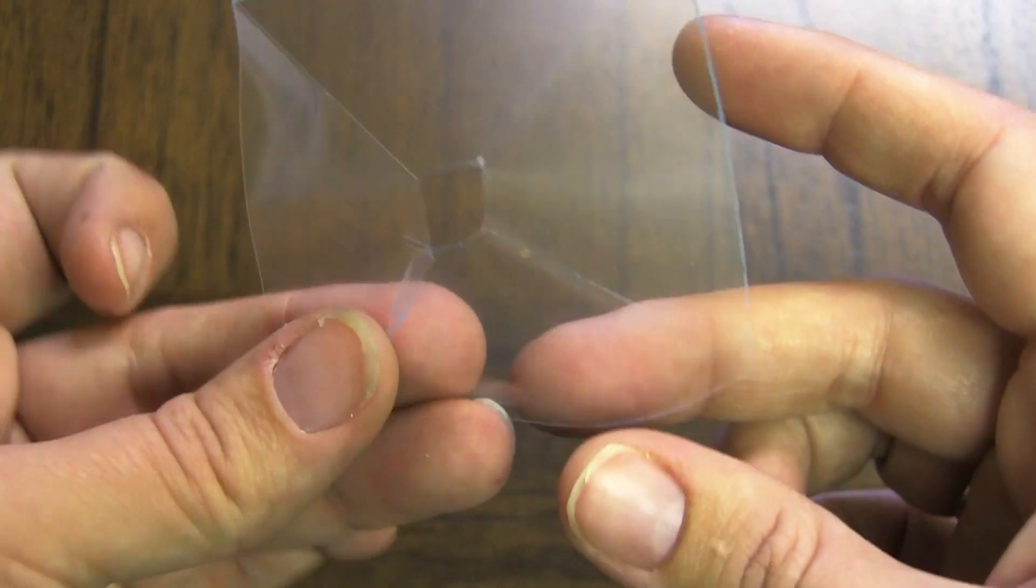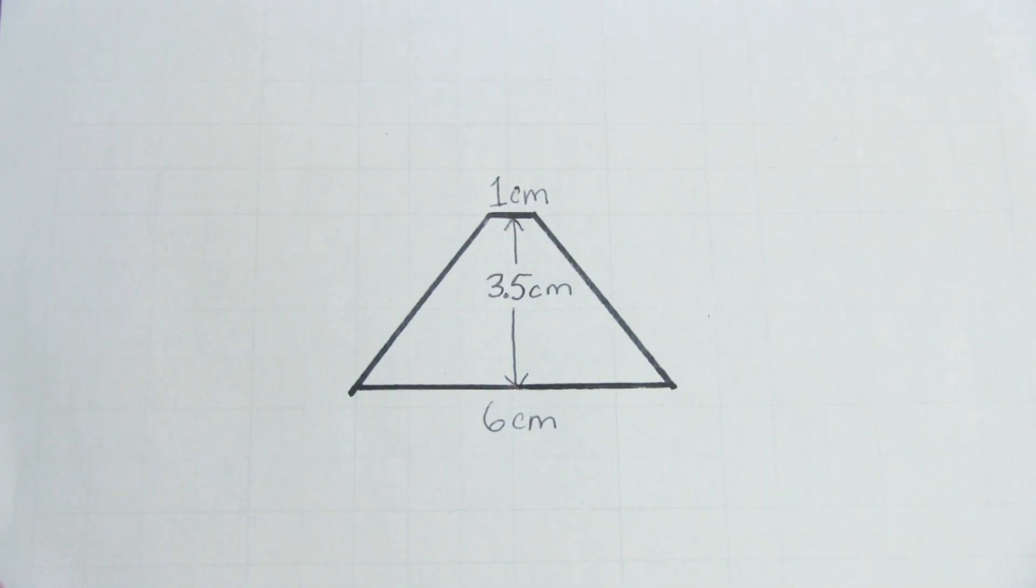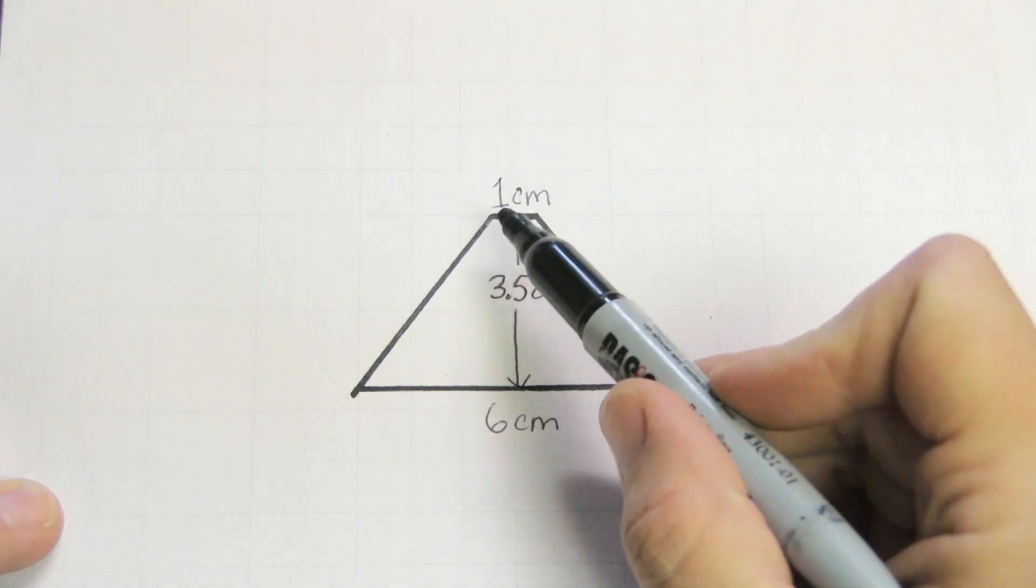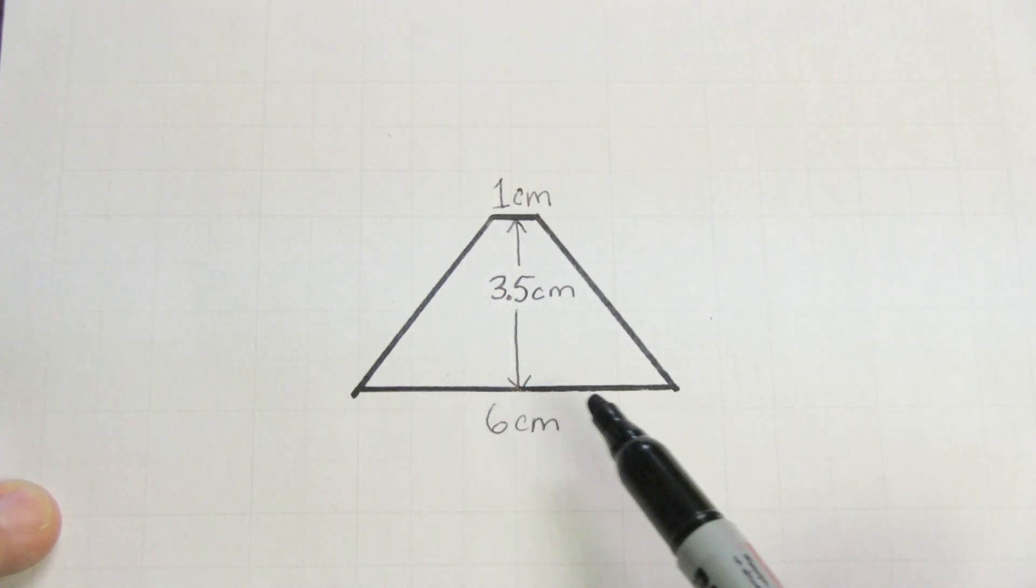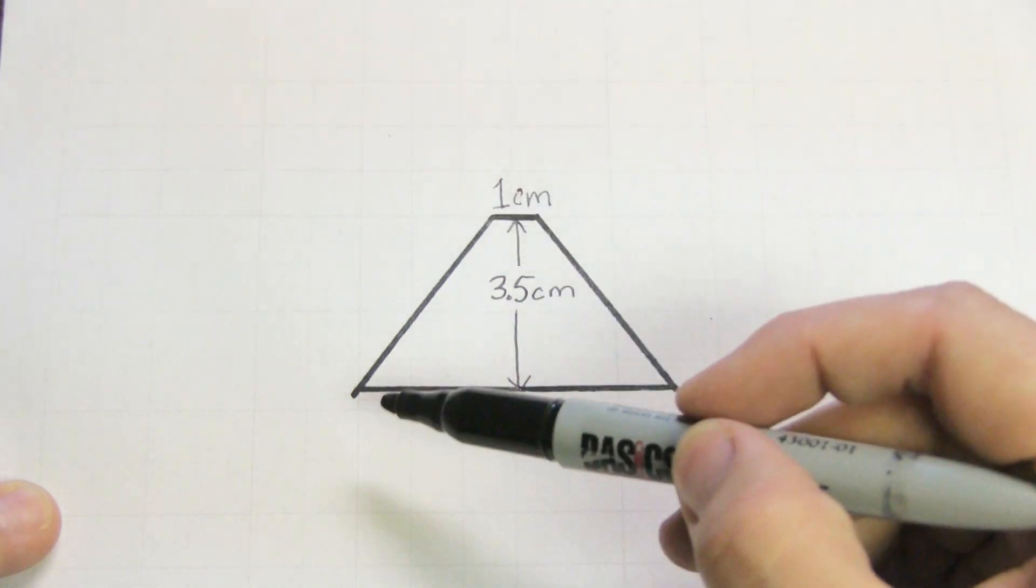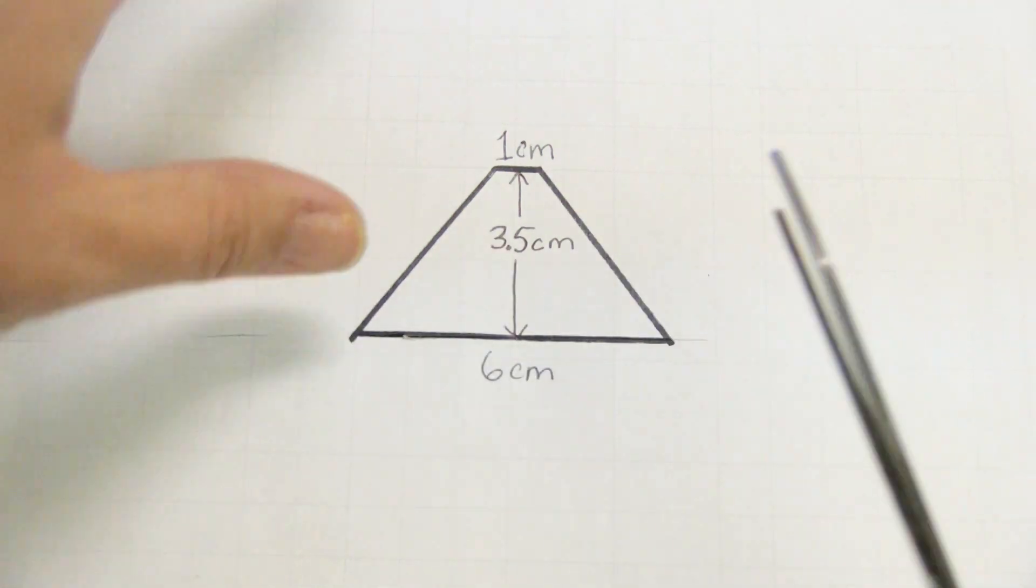So to make the pyramid shape, you're going to make a template that measures one centimeter at the top, and you're going to measure three and a half centimeters down and make a line at the bottom that is six centimeters. Join the corners on each side and go ahead and cut that out.